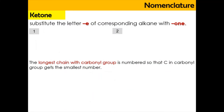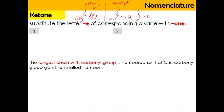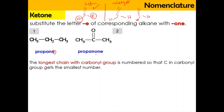Now we're going to do ketone. As mentioned, ketone has a C double bond O, but the carbon is attached with two R groups. For aldehyde, it can have both hydrogen or one R group. For naming ketone, we substitute the letter E of the corresponding alkane with ONE. For example, propane has three carbons, and when we change one of the carbons to C double bond O, the E is changed to ONE, giving propanone.